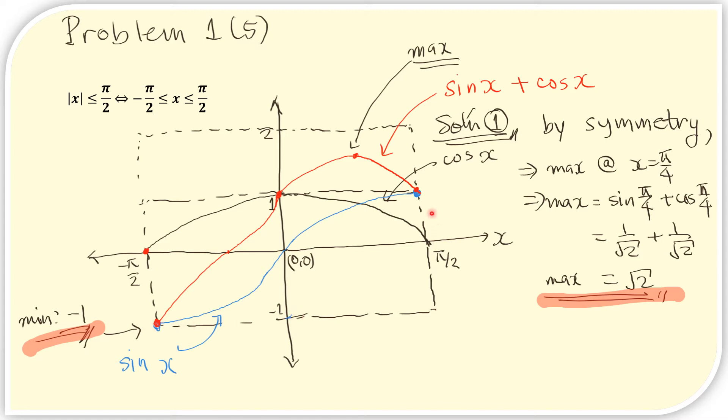At the other endpoint, cos x is 0 and sin x is 1. So the sum would be here at 1. Here at the center, cos x is 1 and sin x is at this point here, 0. So the red sum is here at 1.